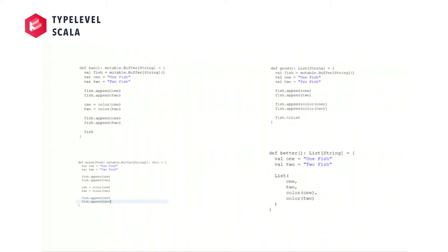Here we have some typical code I used to see a lot. On the left, we have some bad stuff — it breaks all the immutability rules. We're returning mutable collections, taking in mutable collections, and setting function returns equal to vars. On the right, we've got a little bit better code. We create a buffer, but it doesn't exit its defining scope. You know what's going to happen with the buffer at all times — that's really the key thing. It's the data and the functionality, being able to wrap your head around it more easily. That's what functional programming gives us.